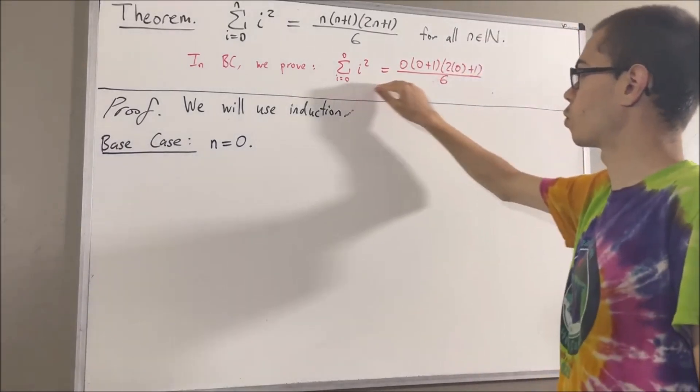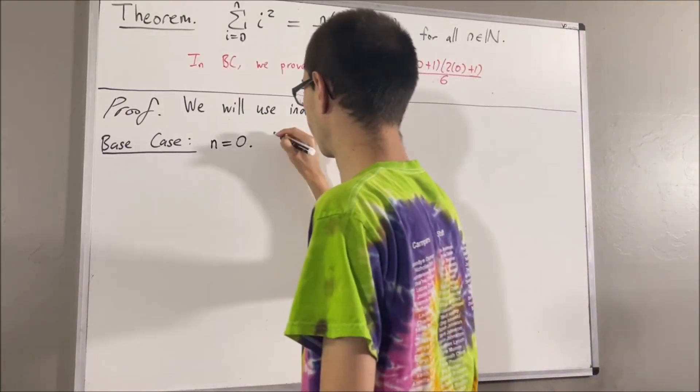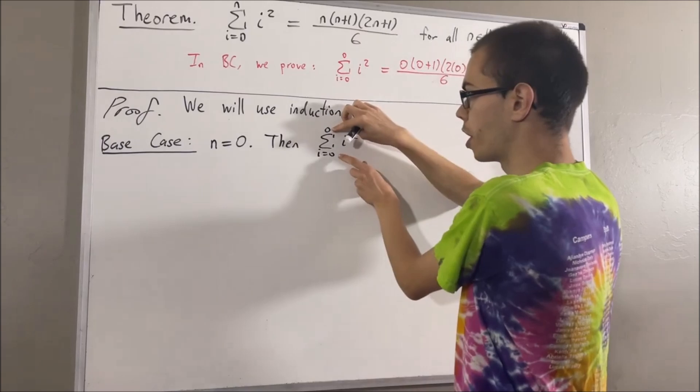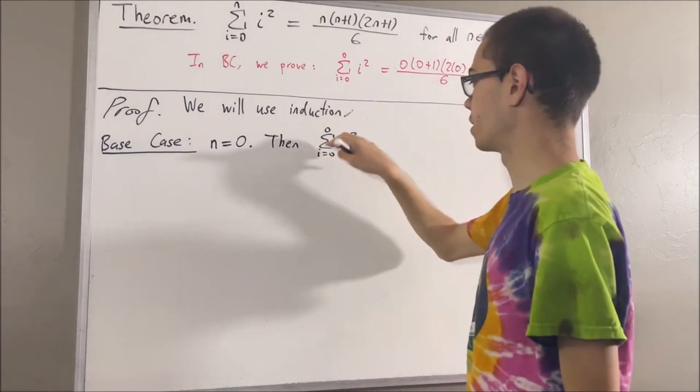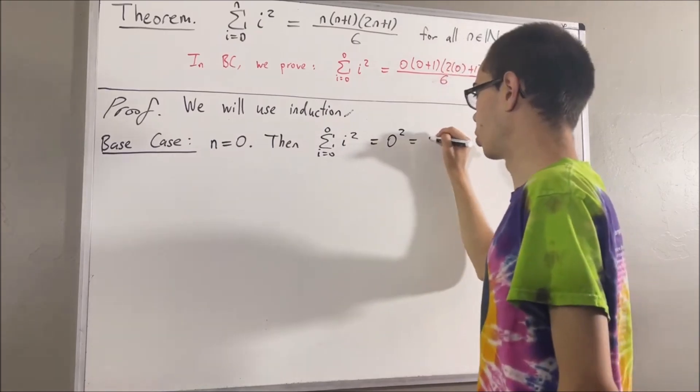So really, this is what we're trying to prove. Let's start by writing the left-hand side. Now since the lower and upper bound of the sum are the same, we know that this entire sum is just going to be equal to zero squared, and this is just equal to zero.